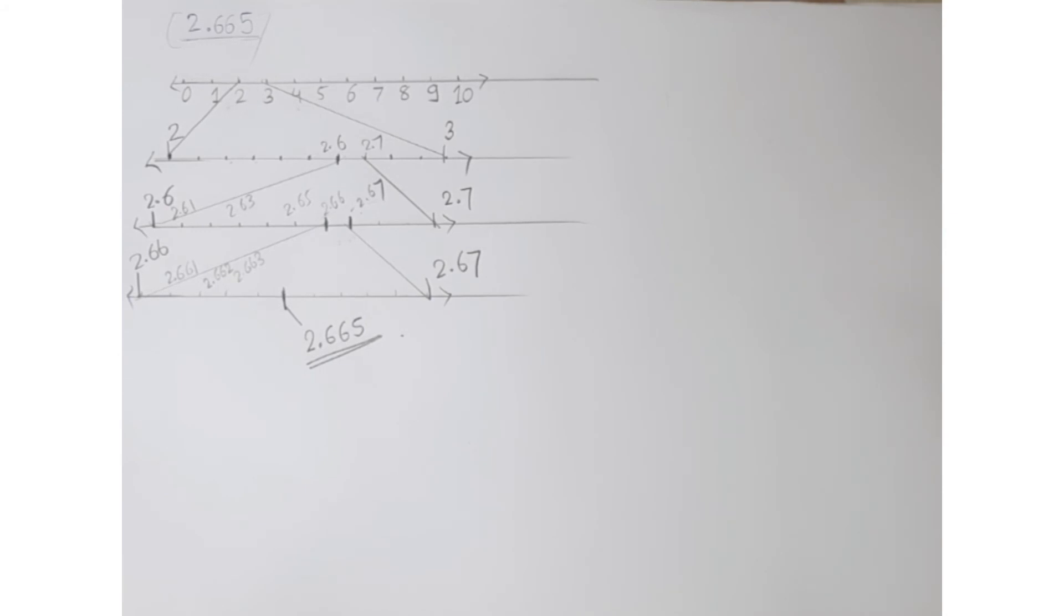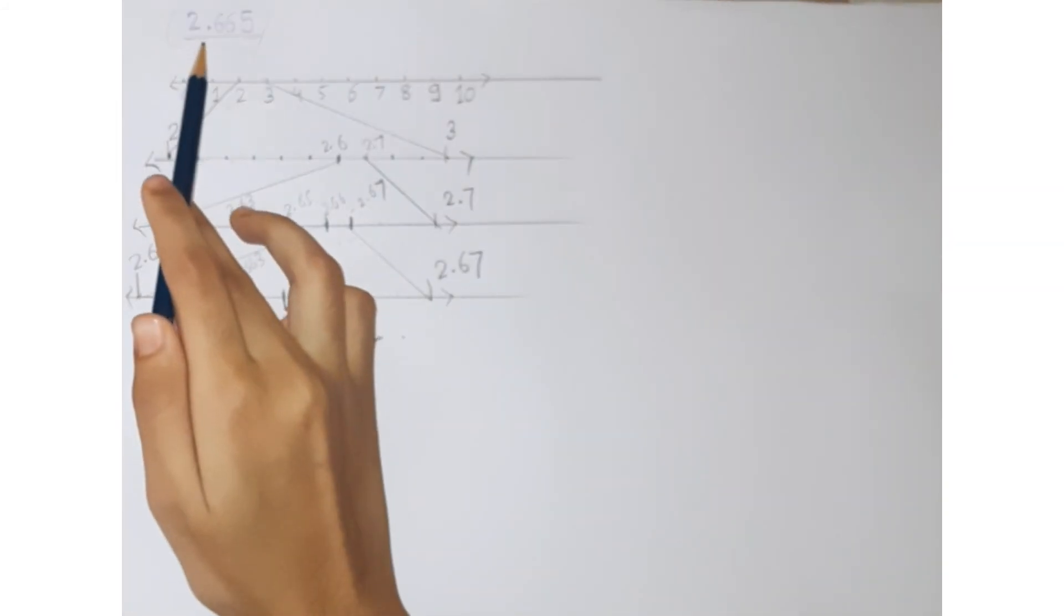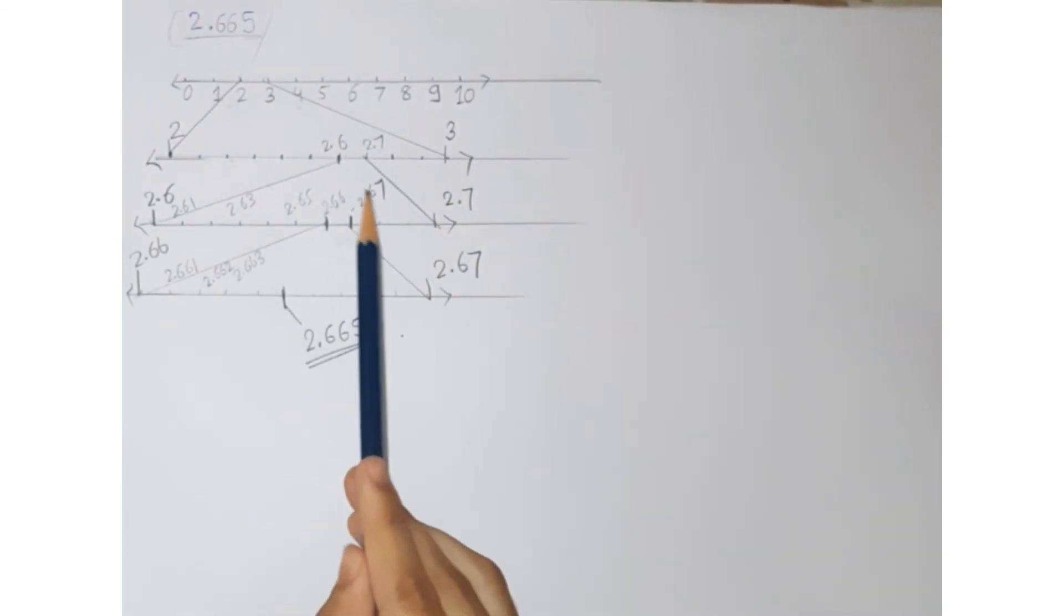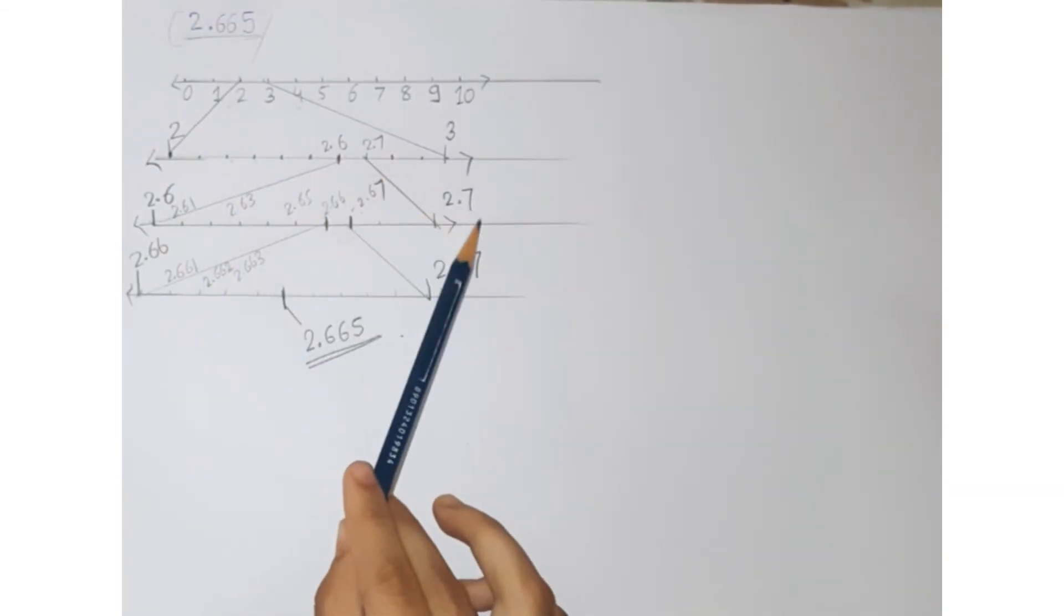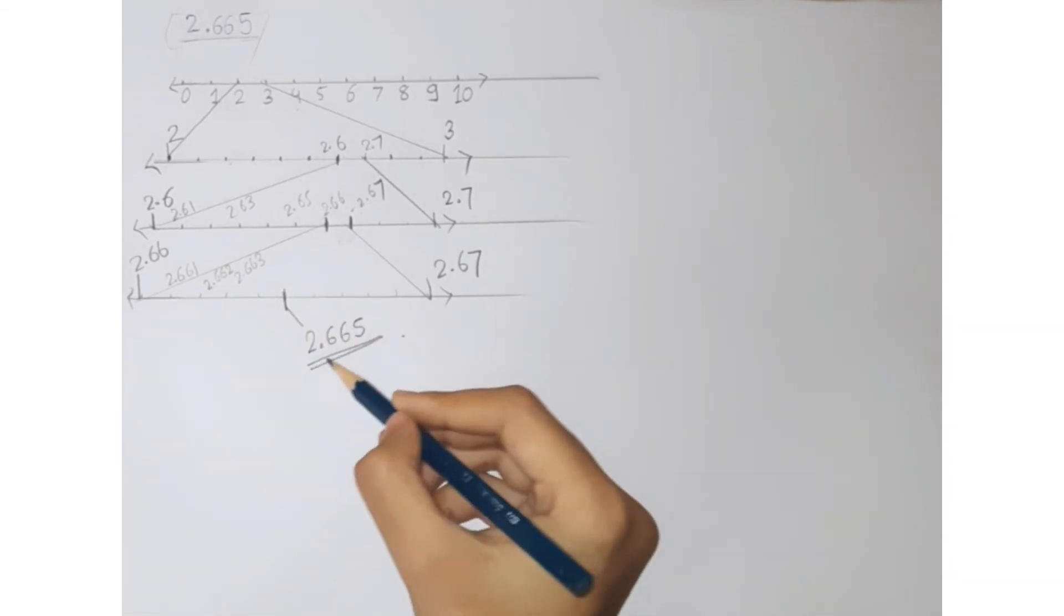We call this process of visualization of representation of numbers on the number line through a magnifying glass as the process of successive magnification. As first we have magnified 2 and 3, then between 2.6 and 2.7, then further 2.66 and 2.67, and here we have got the result that it lies here.